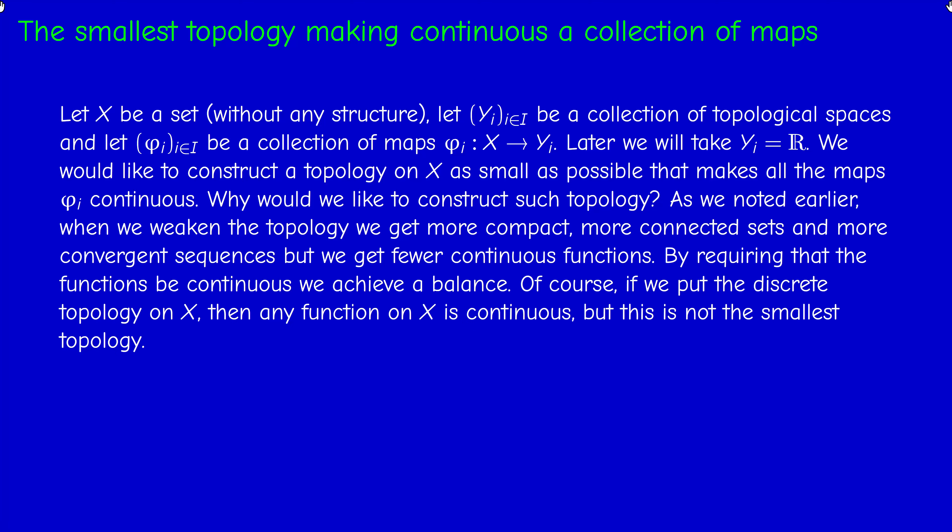If you put the discrete topology on X, then any function on X is continuous. But this is the biggest topology, not the smallest topology on X. So suppose that the problem is solved, and let T be such a topology.